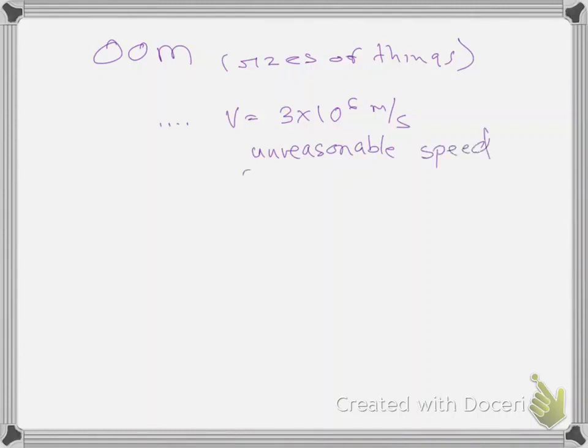What are reasonable speeds for a car? So if we calculate something, we say, oh, it's got to go three million meters per second. That's not reasonable. Cars can't go that fast. Planes can't go that fast. Rocket ships can't go that fast, yet. Three million meters per second? No.